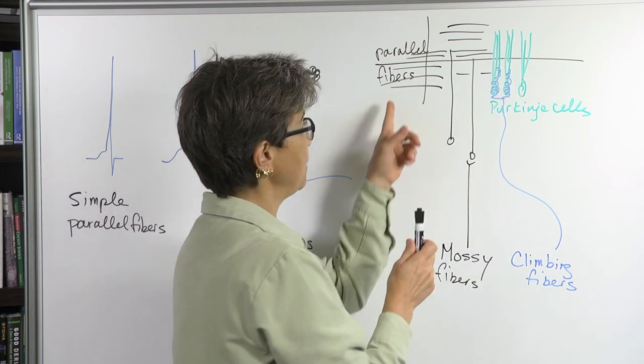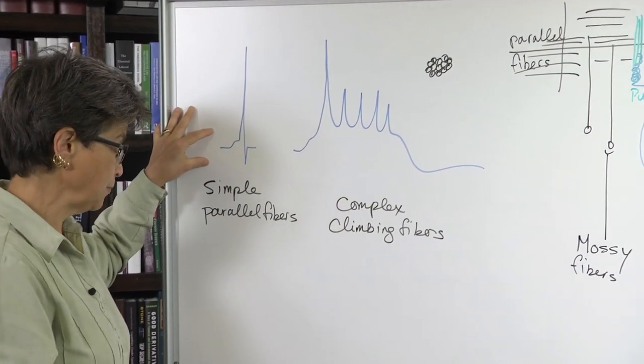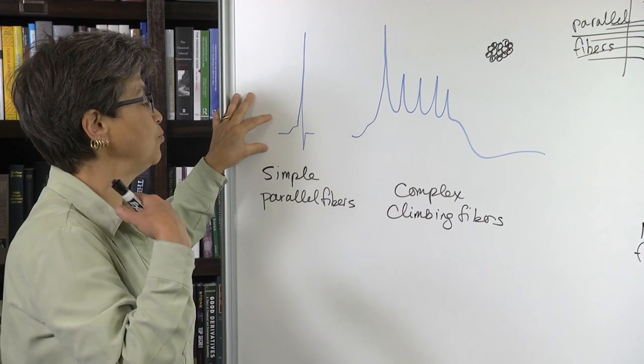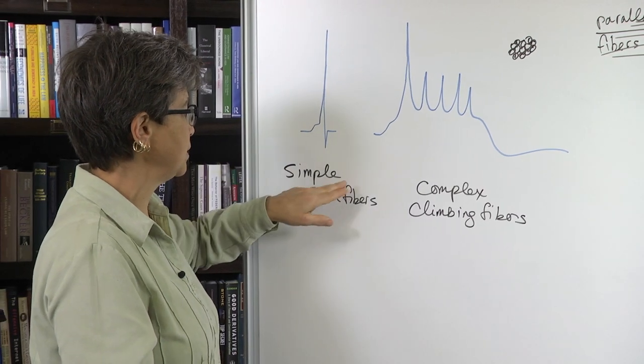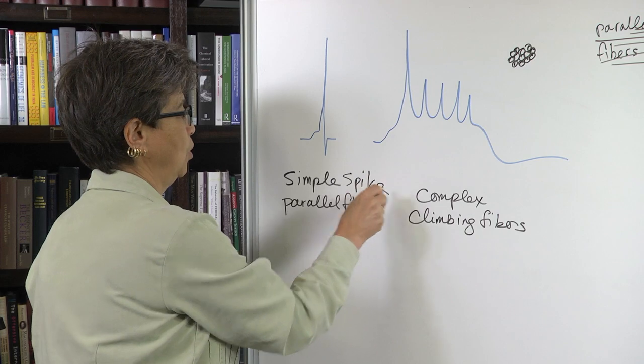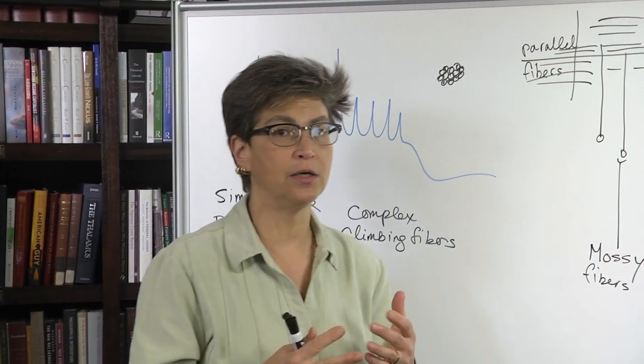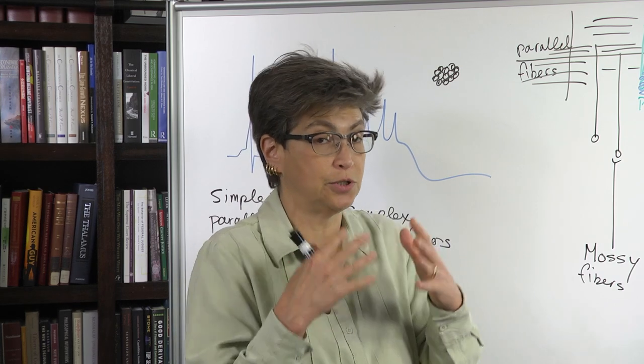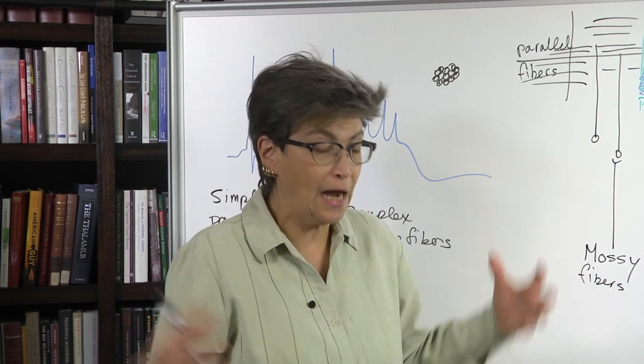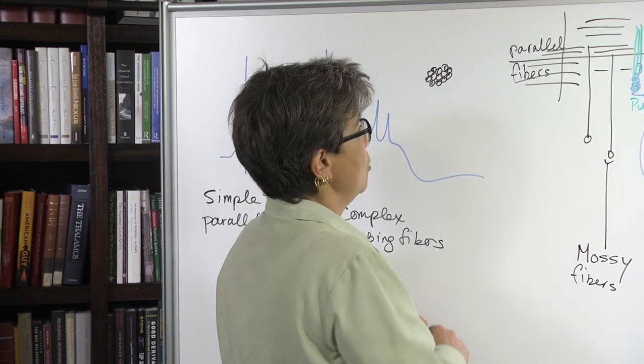That's what you see. So it is these parallel fibers that are producing input or driving the Purkinje cells. So each parallel fiber has a very small effect. The response to parallel fiber input is called a simple spike. It's just a single action potential. And any one parallel fiber is not able to drive a simple spike. It takes a lot of parallel fiber inputs to drive a simple spike.